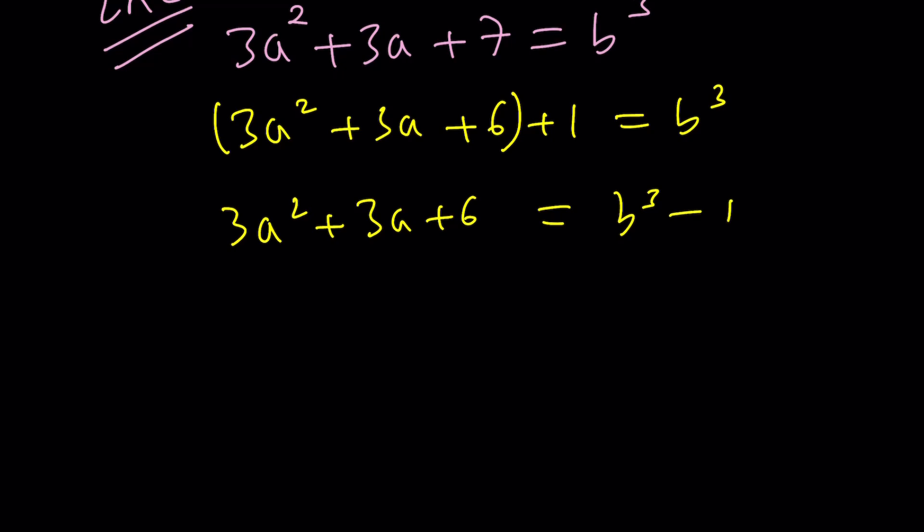Now the left-hand side can be written as 3(a² + a + 2), which is clearly a multiple of 3. And the right-hand side can actually be factored as a difference of two cubes. You hopefully know that identity, which is a very important formula in algebra. And here's what we get.